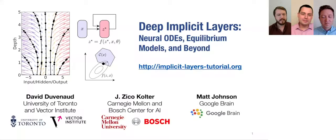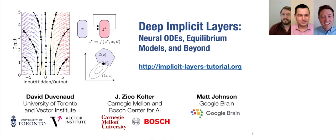Hi everyone. I'm Zico Coulter. I'm with Carnegie Mellon and the Bosch Center for AI. I'm David Duvenot and I'm at the University of Toronto and the Vector Institute. And I'm Matt Johnson from Google Brain.